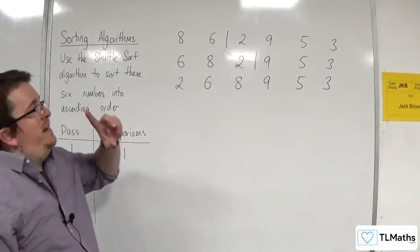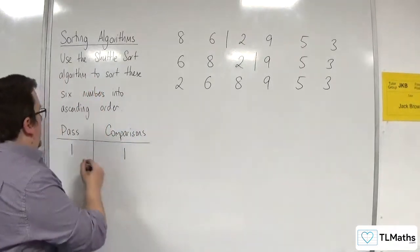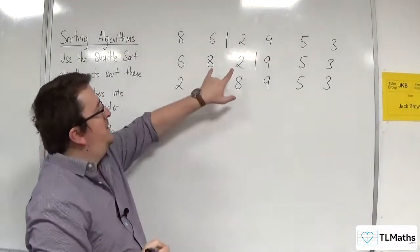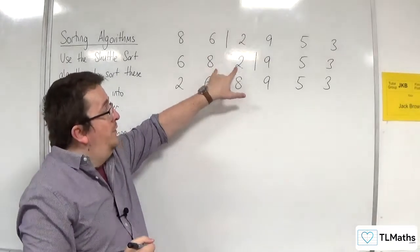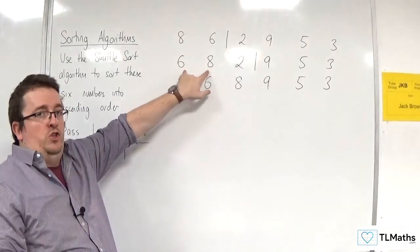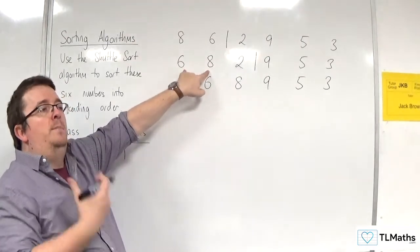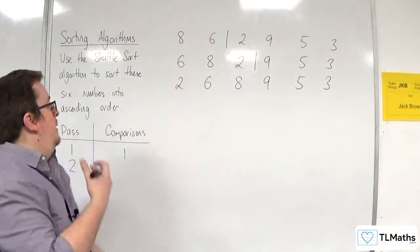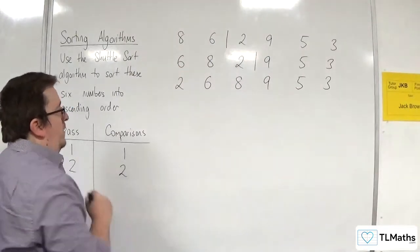How many comparisons were made in that second pass? Well, I had to compare the two and the eight, and then once they had been swapped, I had to compare the six and the two to make sure that the two is in the correct position. But they had to swap as well. So there were two comparisons that were made there.